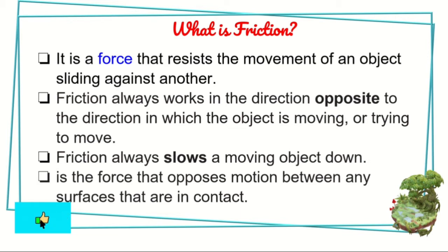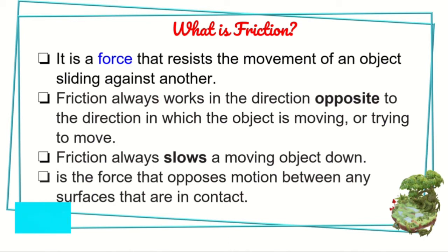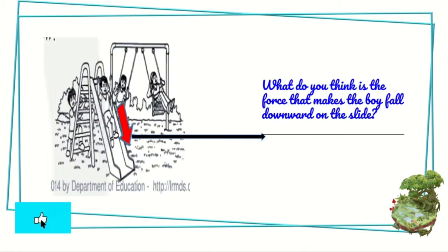Now let's proceed to friction. What is friction? It is a force that resists the movement of objects that slide against each other. Friction always works in the direction opposite to the direction in which the object is moving or trying to move. Friction always slows a moving object down. It is the force that opposes motion.